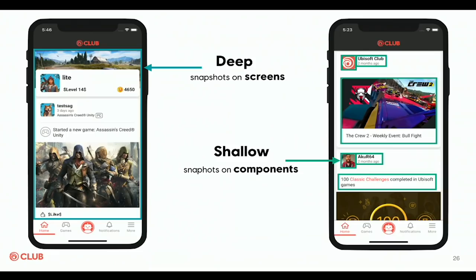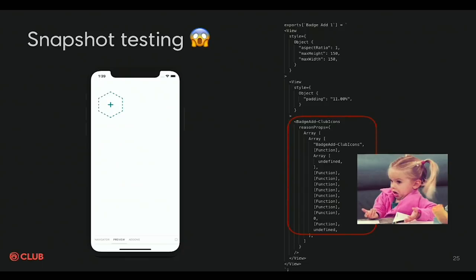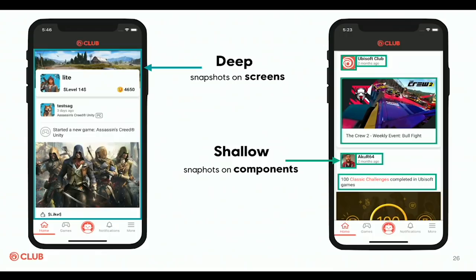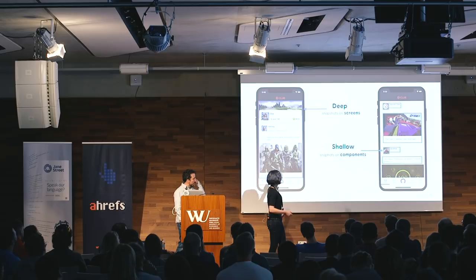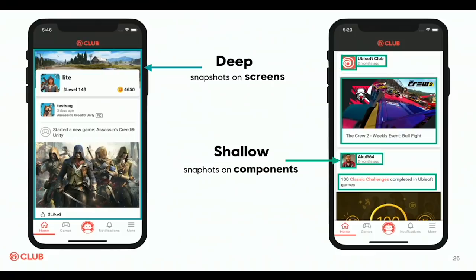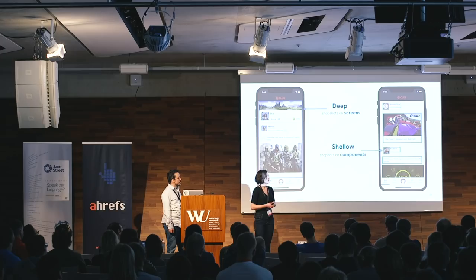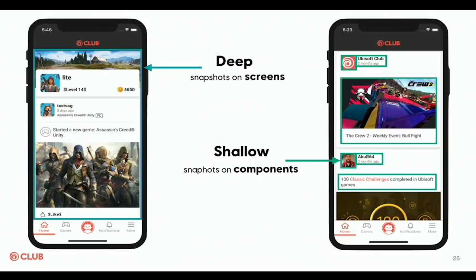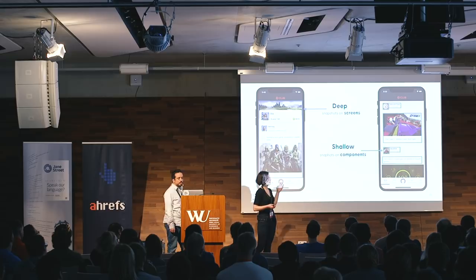This is half the information and we don't have a real solution here. What we found as a solution for our team was to have shallow snapshots on dumb, low-level components — even if it means sometimes we have reasonProps displayed, we accept that. But we also have deep snapshots on the screens, the top-level components, which means we have the full component hierarchy generated by React Native. These are very big snapshots and not ideal, but it's the solution we found to avoid as much regression as possible.